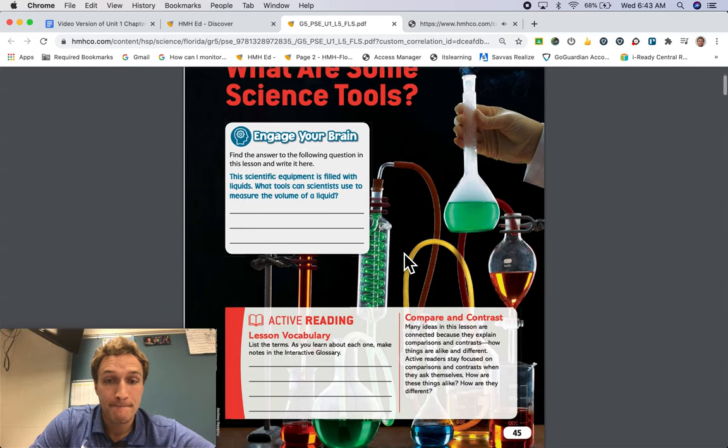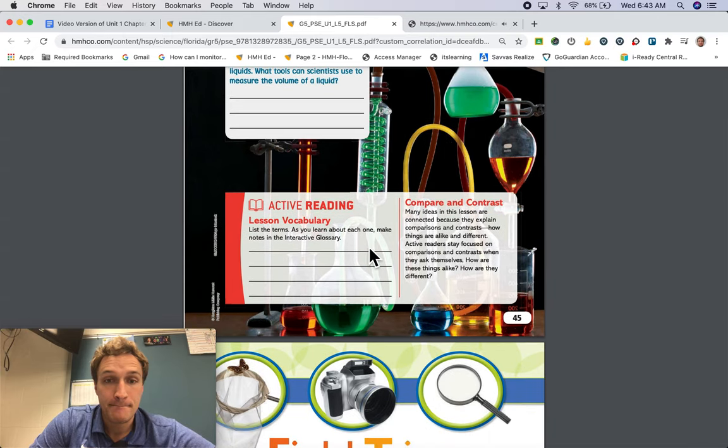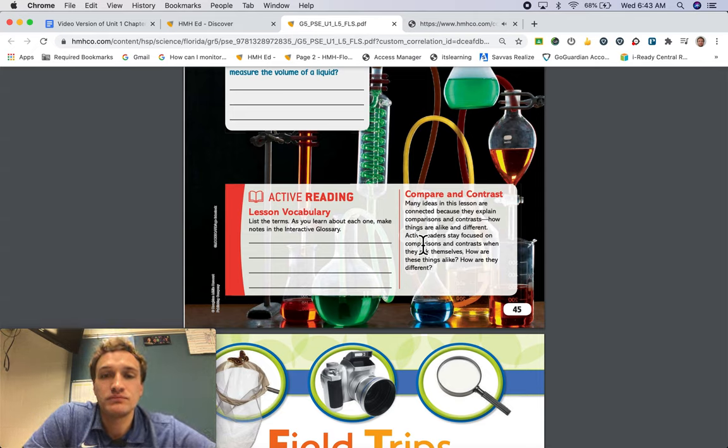Active reading. Lesson vocabulary. List the terms. As you learn about each one, make notes in the interactive glossary. Compare and contrast. Many ideas in this lesson are connected because they explain comparisons and contrasts. How things are alike and different. Active readers stay focused on comparisons and contrasts when they ask themselves, how are these things alike? How are they different?